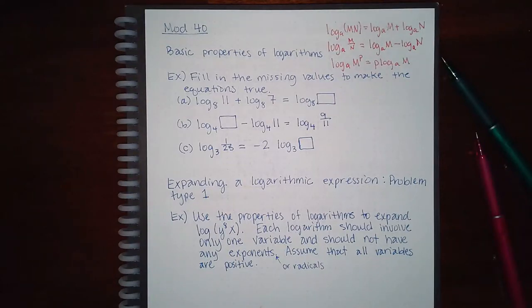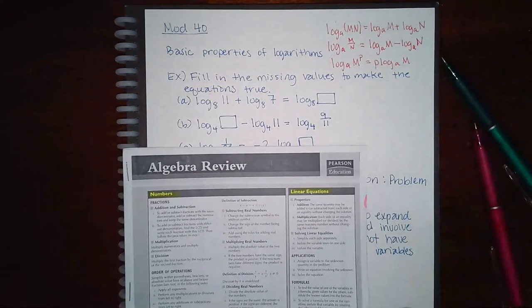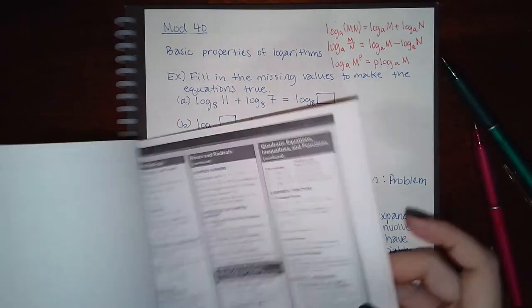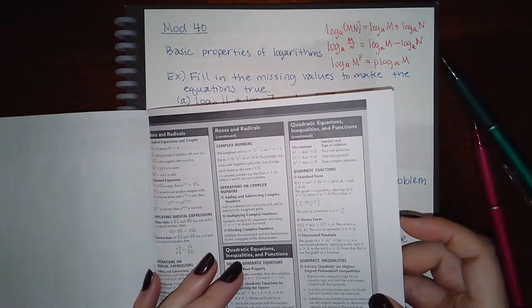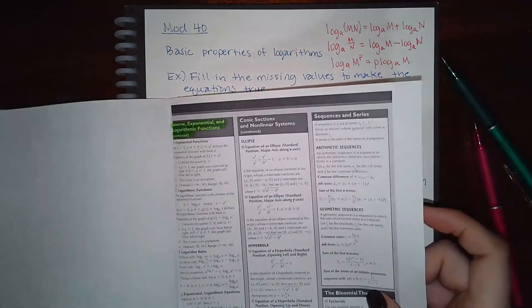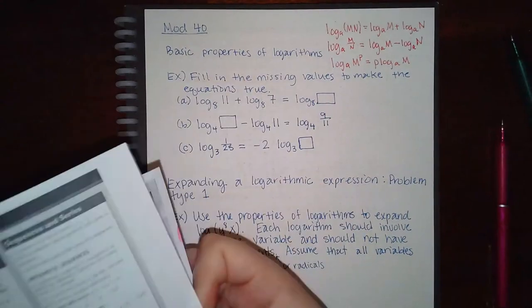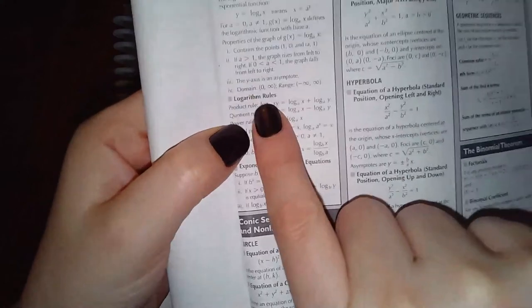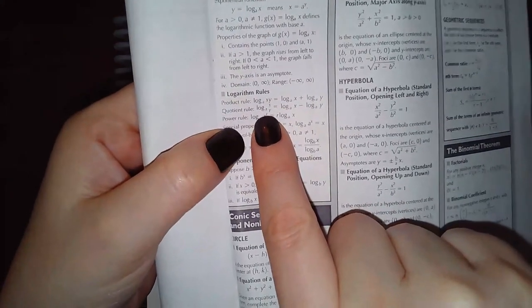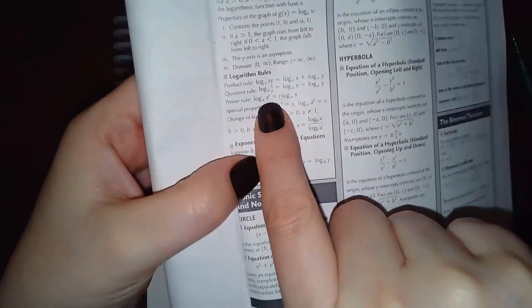This is module 40. As we move into module 40, we'll start to talk about the basic properties of logarithms. This is the way that Alex provides those properties. If you look on your sheet that was given, they have the same properties — they just don't use M and N, they use X and Y. They have the product rule, the quotient rule, and the power rule, and then some other rules we haven't gotten into just yet.